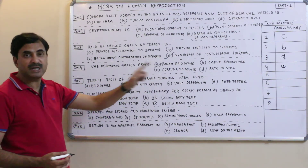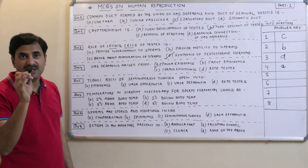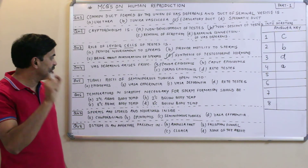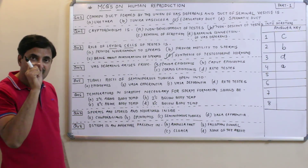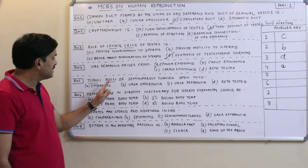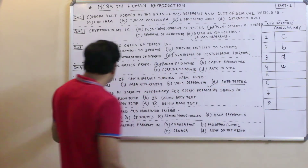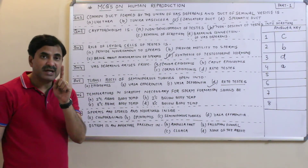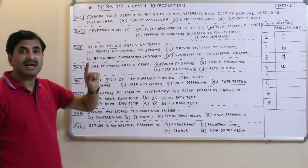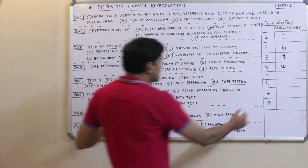Question five: Tubuli recti of seminiferous tubules open into what? Seminiferous tubules are found in the testicular lobules in the testes. The seminiferous tubules form tubuli recti, which are straight tubules. These tubuli recti then open into a network-like structure called the rete testis. So seminiferous tubules first form tubuli recti, and tubuli recti open into rete testis. The answer to question five is D.